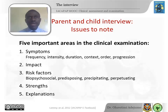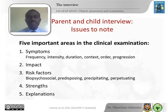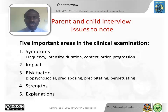There are five important areas to keep in mind in every stage of the clinical examination. First, symptoms: how frequently do they occur, how severe are they, how long do they last, in what context do they occur — at school, at home, or in public? Which symptoms came first? Are they worsening, improving, or staying the same? What is the impact of these symptoms on the child's functioning and the family's functioning?